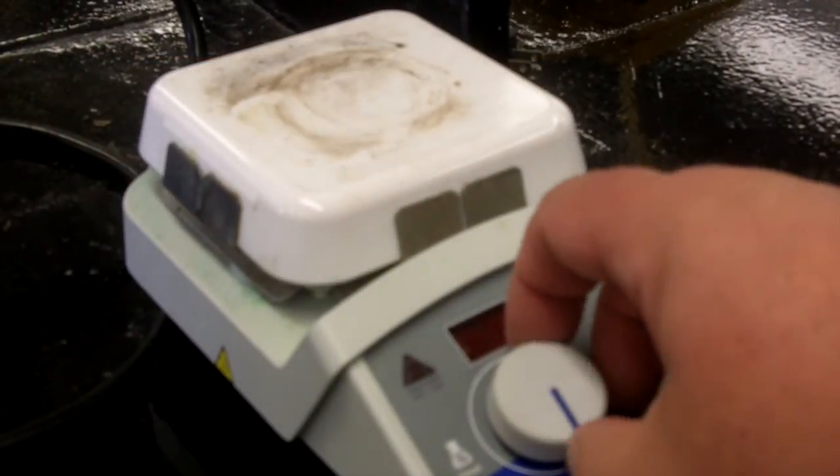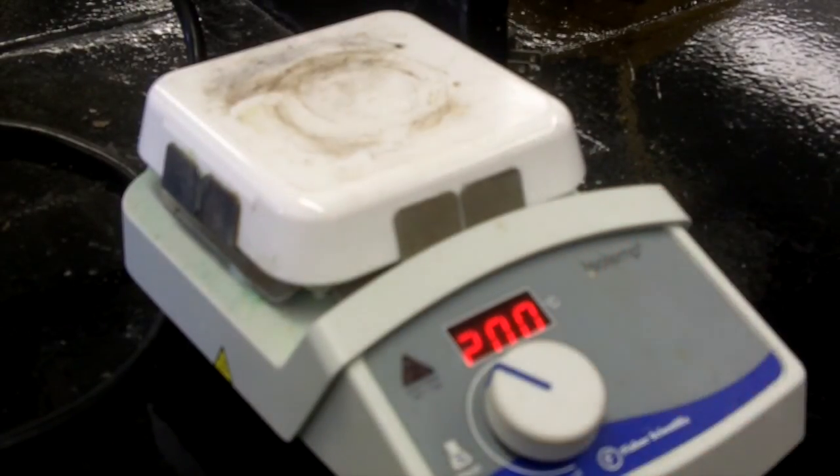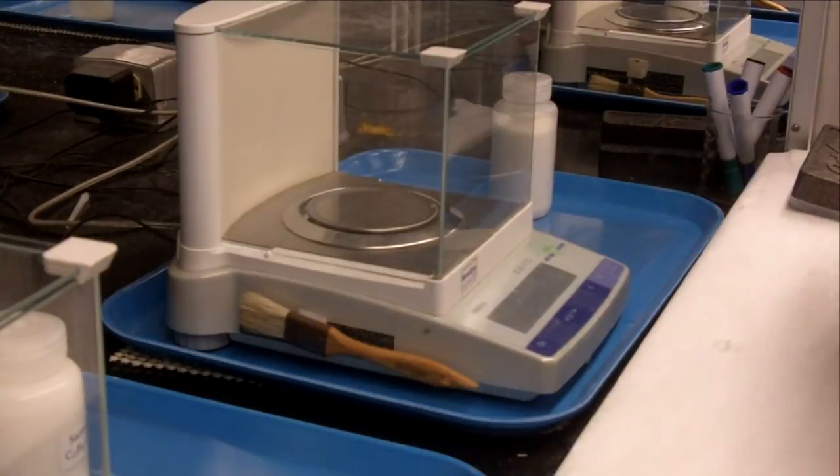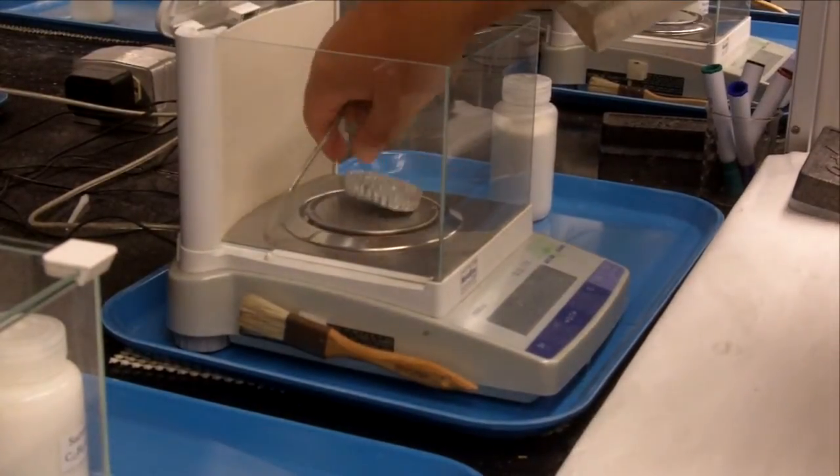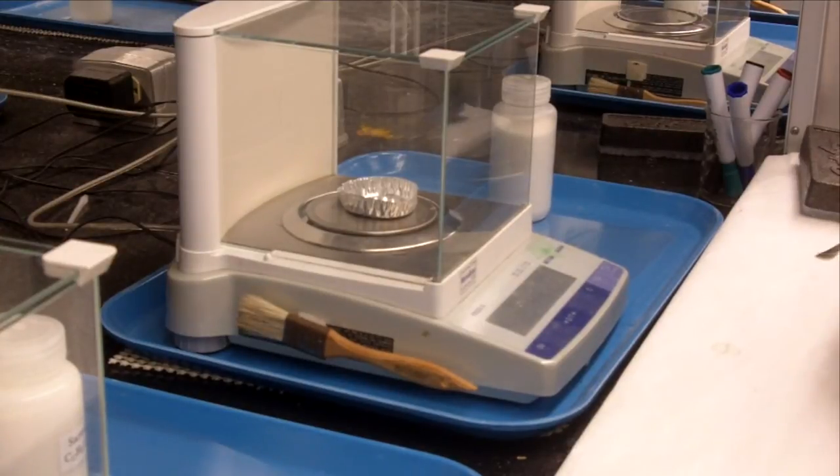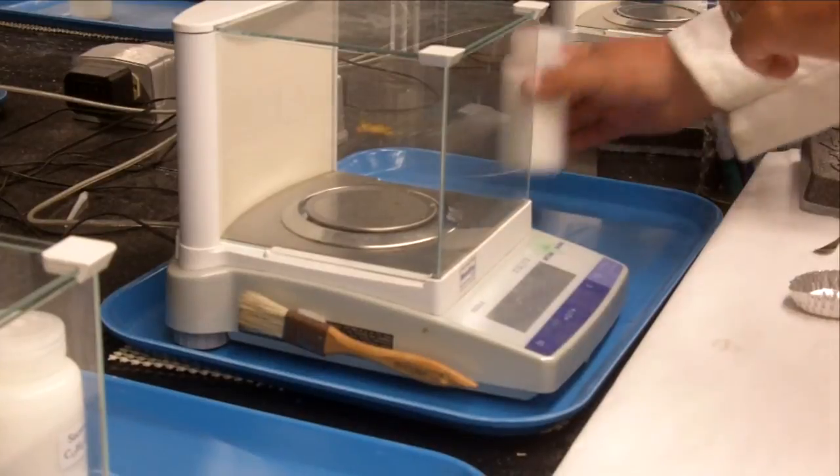So the first thing you want to do when you start is turn on a hot plate. We're going to use a hot plate instead of a Bunsen burner. It's just a little bit safer, not quite as stinky. So we'll set it at about 150 to 200 degrees. Now, while we're doing that, we'll pick one of the unknown bottles. There'll be a couple of different ones that have different ratios. We'll grab a weighing pan, one of these aluminum weighing pans.